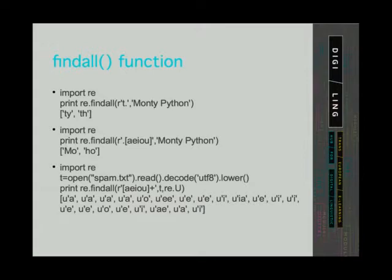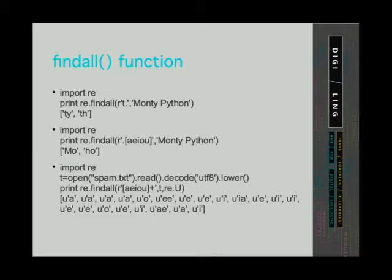In the third example, we are searching through a file named spam.txt. We have opened the file, read the file, decoded the file, and converted the characters to lowercase. All of this is assigned to a variable t. In this example, we have three arguments. The first one is the regular expression; we are looking for all occurrences of one vowel or two vowels appearing one after the other. The second argument is t — the string in which we are searching, that is the content of the txt file. With the third argument, we tell the function to incorporate also non-ASCII characters in the search. The function returned all occurrences of one or two vowels.